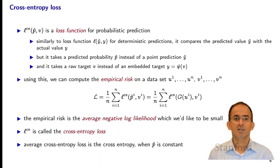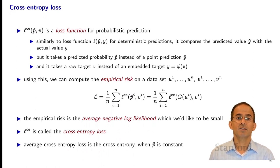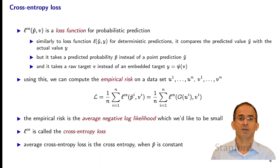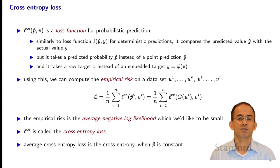Here things are different in two ways. First, our prediction isn't a y-hat but a p-hat — a probability distribution. Second, the second argument of the loss function isn't an embedded v, it's the raw target v, which is simply one of the original target set script V. We don't need to embed it into R^M in order to evaluate the loss.